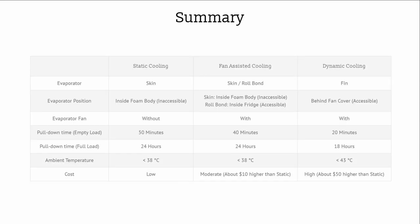When it comes to selecting a cooling system, there are several factors to consider. One important factor is the ambient temperature. Static cooling and fan-assisted cooling are ideal for ambient temperatures below 38 degrees Celsius, while dynamic cooling works well up to 43 degrees Celsius. Additionally, special requirements should be taken into account, such as frequent door openings throughout the day or the need for lower temperatures inside the cabinet. Here's a summary highlighting the key differences among the three cooling systems for your reference.